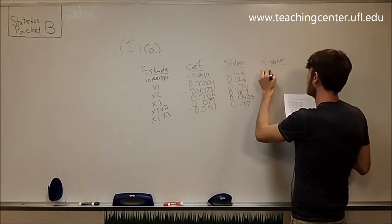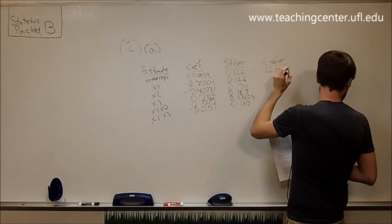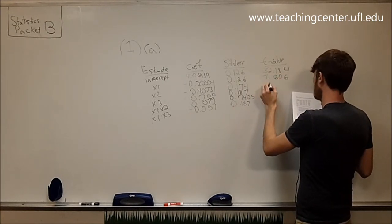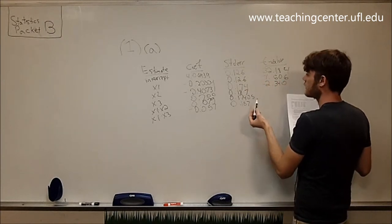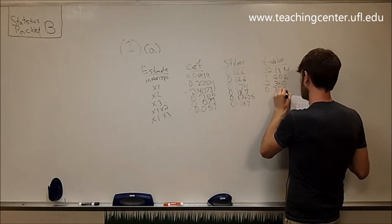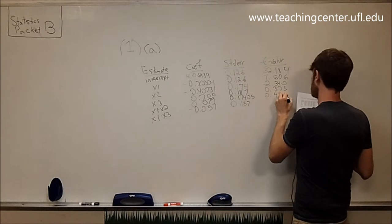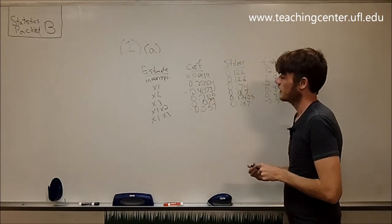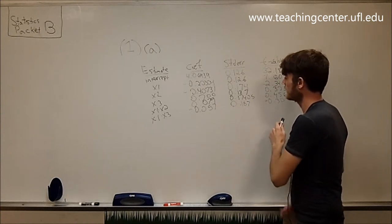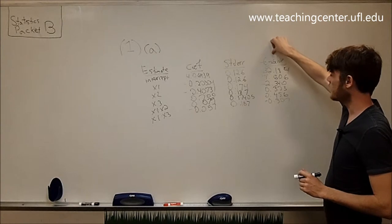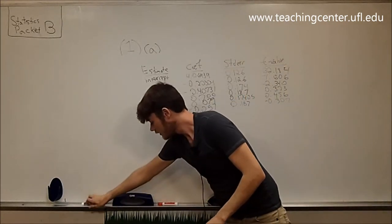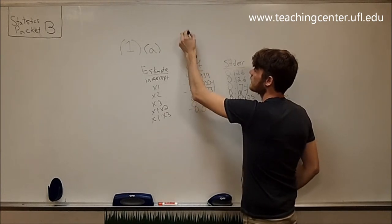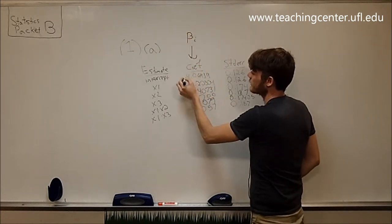Also remember that this output — you might be working on it on your test and forget what these things mean. That's OK. Just remember, this output is printed out to be useful to you, to make it really easy to understand. So if you forget what each integral part means, just remember what would be useful in this situation — the coefficient itself, the standard error, and the t value.